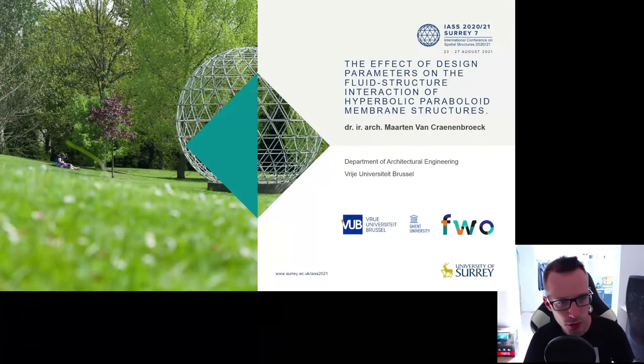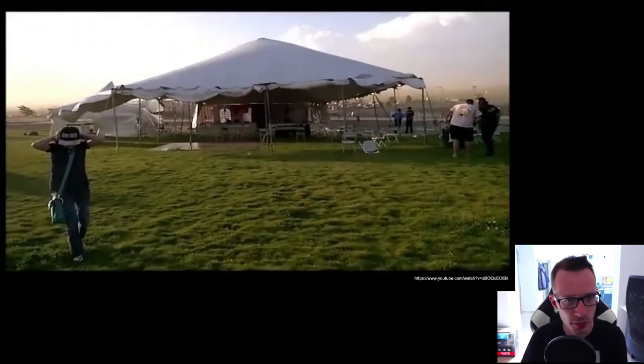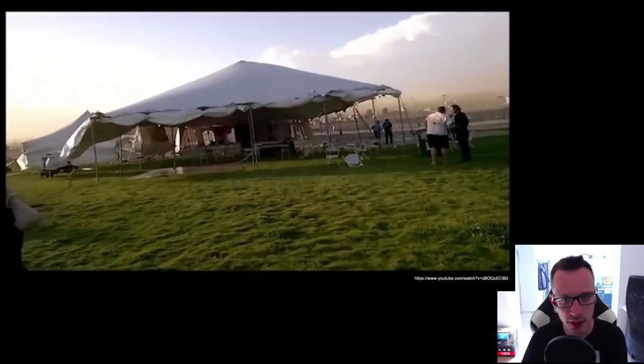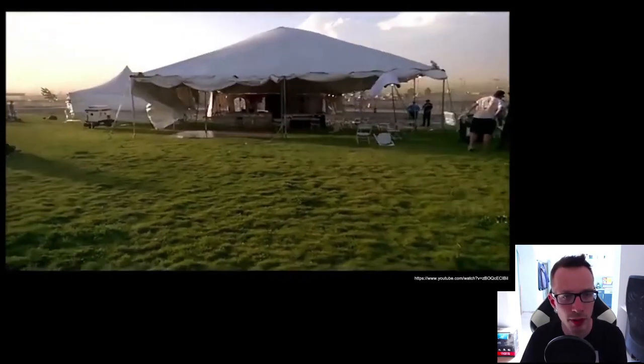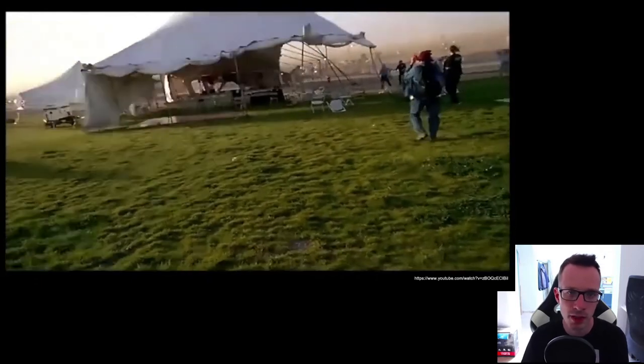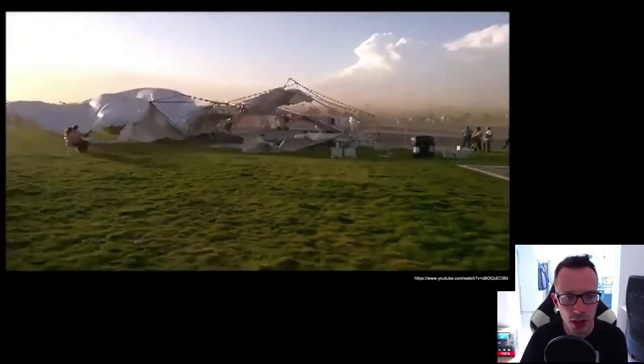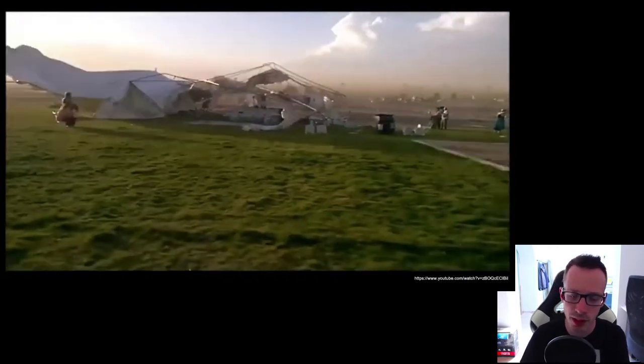Wind loads and membrane structures form a particularly challenging combination. Because of their curved shapes, their low self-weight, and the often temporary nature, which means that the anchorages are relatively weak, they are very susceptible to wind loads, which can in some cases lead to structural failure.